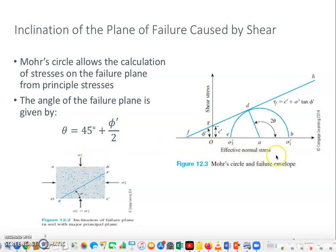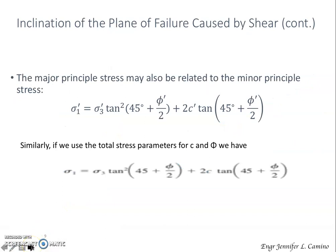We have plotted our sigma sub 1 and sigma sub 3. This now shows the line FDH, which is the failure plane defined by the relationship. The shear stress is equal to C prime plus sigma sub 1 tangent phi prime. Our major principal stress may be related to the minor stress, and sigma sub 1 is equal to this equation.